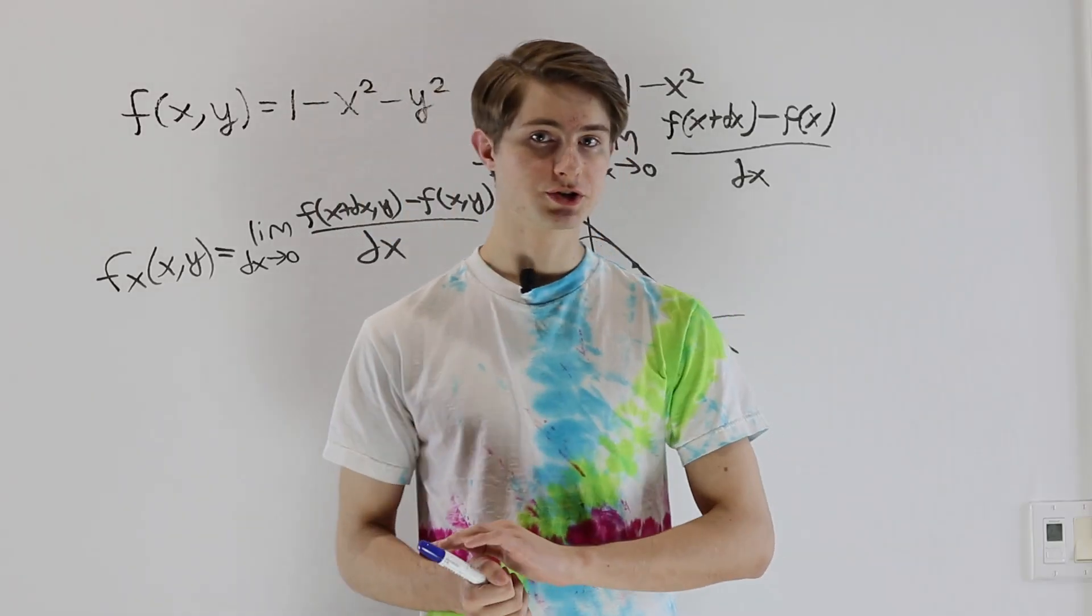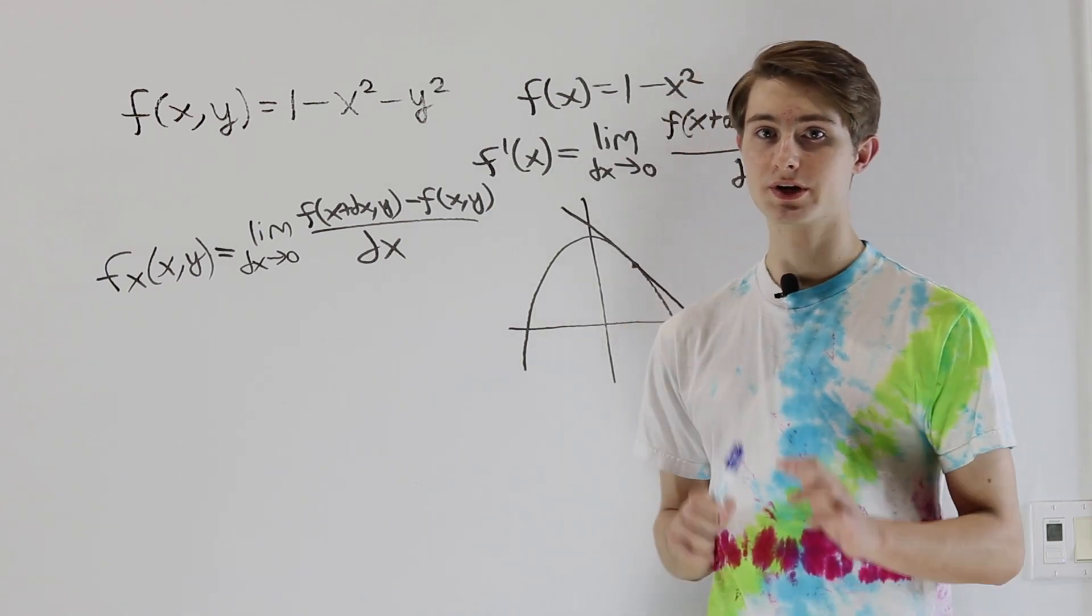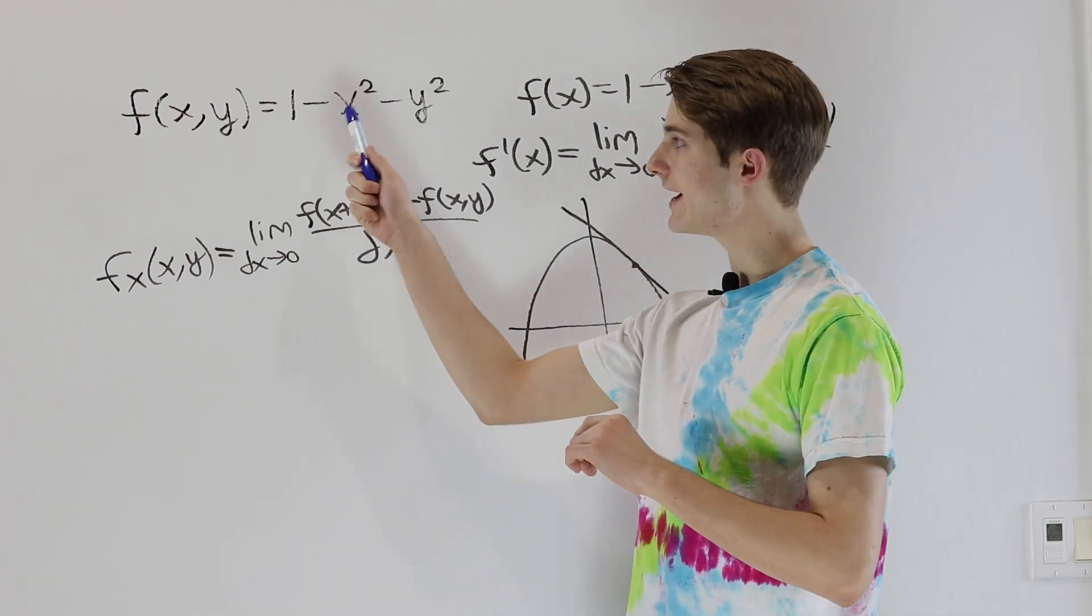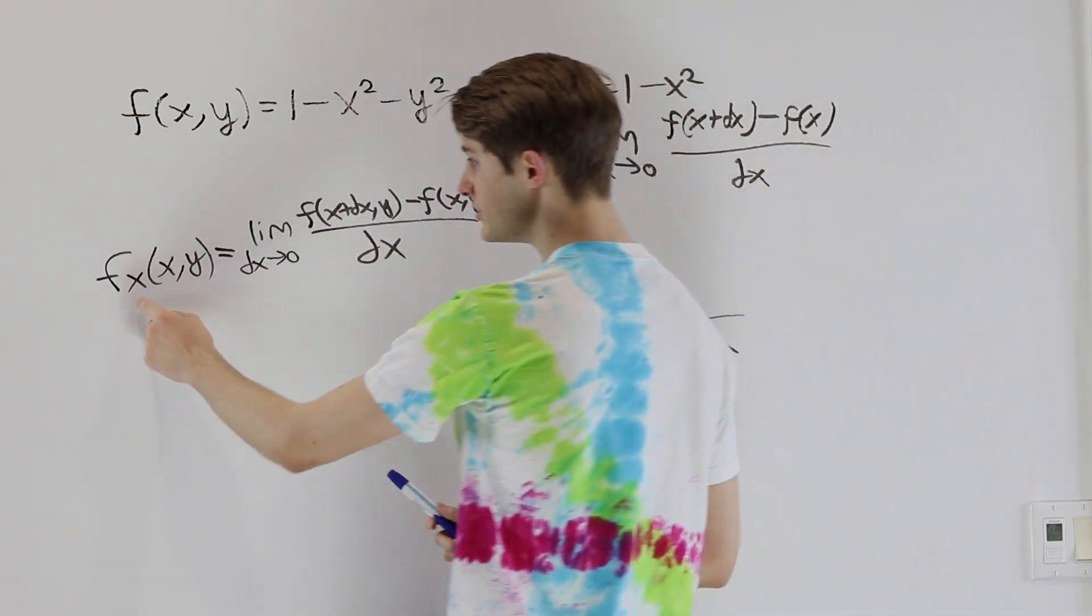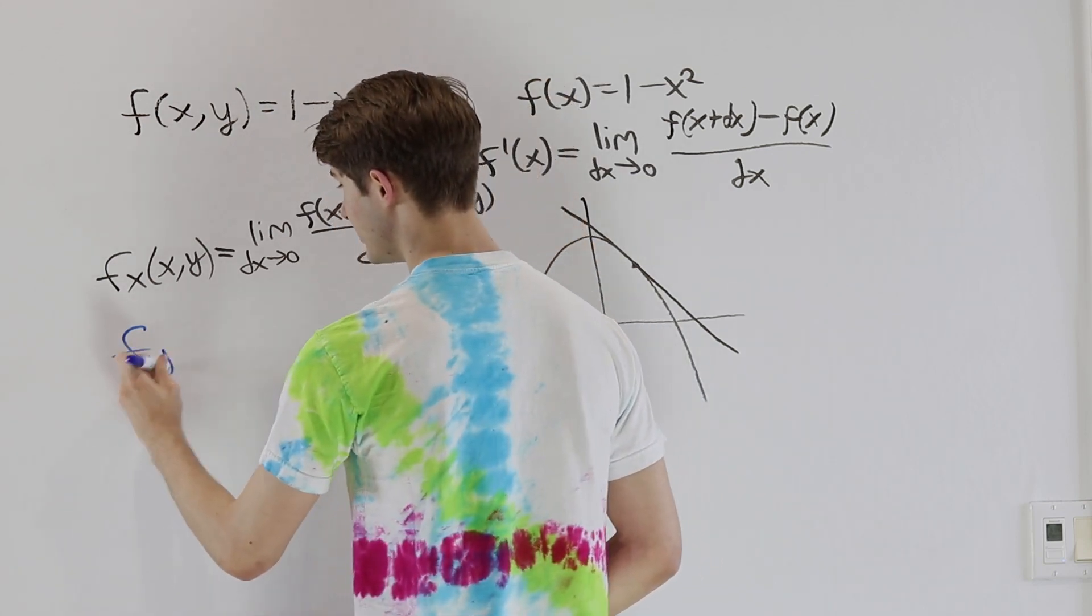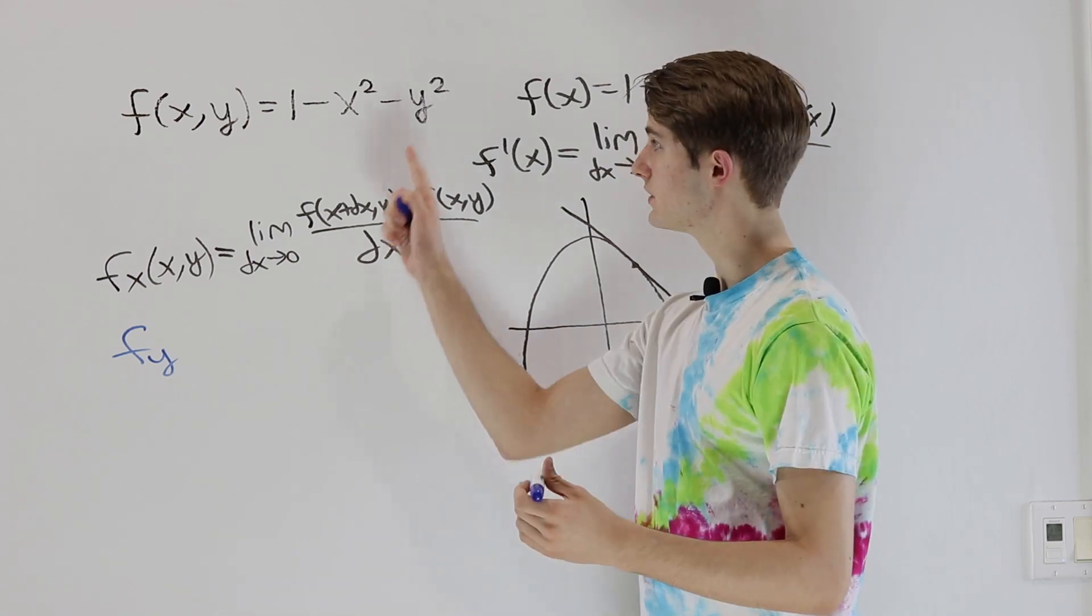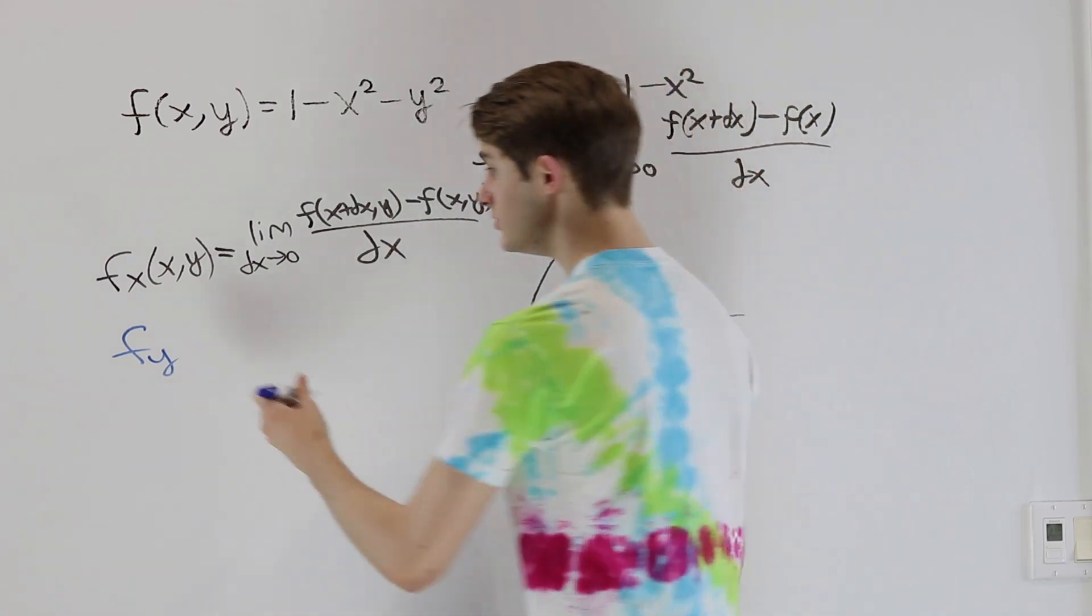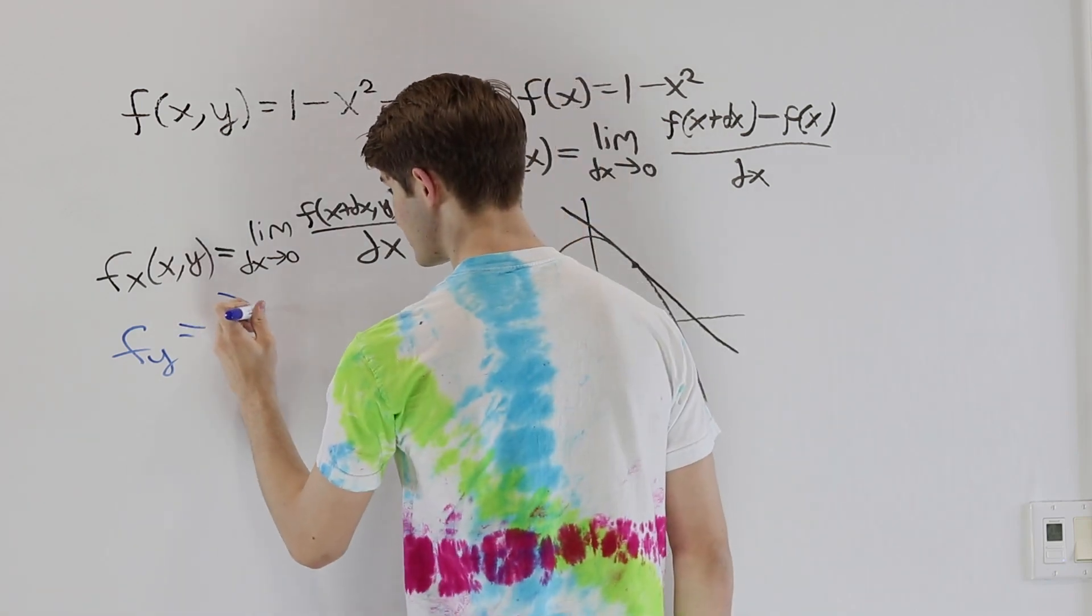So that's how partial derivatives work when we're looking at functions of two variables. To finish up, we're going to take a look at one example where we actually calculate the partial derivative of this function. Now, just like we can denote a partial derivative by taking the function f and putting a letter on the bottom, in this case f sub y is the partial derivative with respect to y, we can use a different notation to say the same thing, which looks like this.